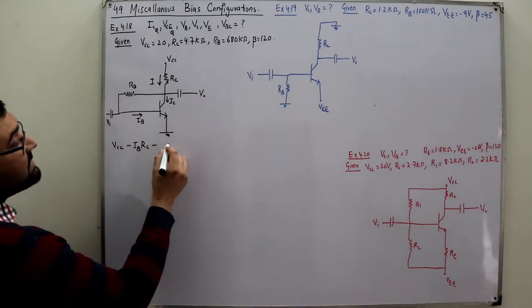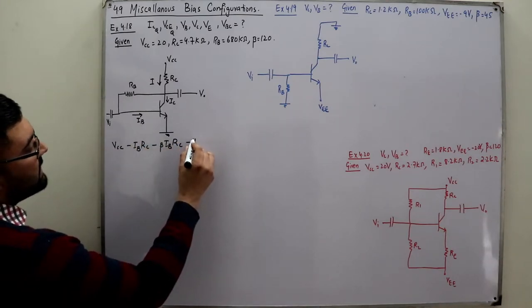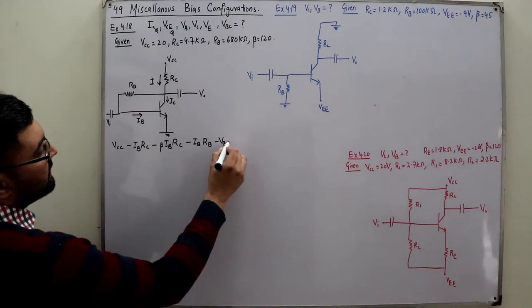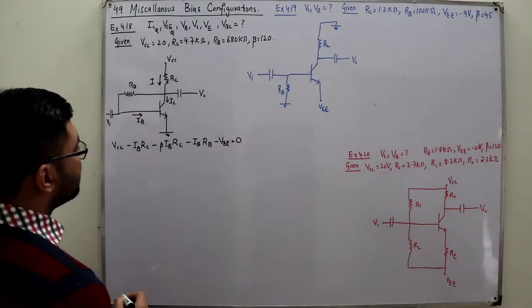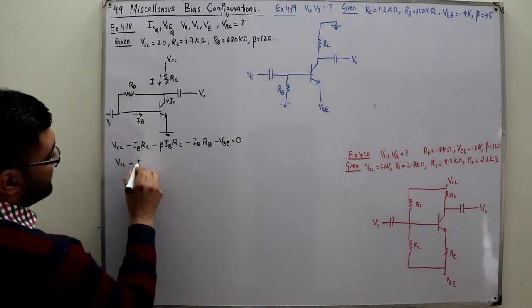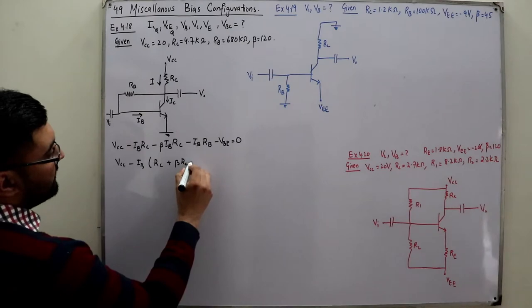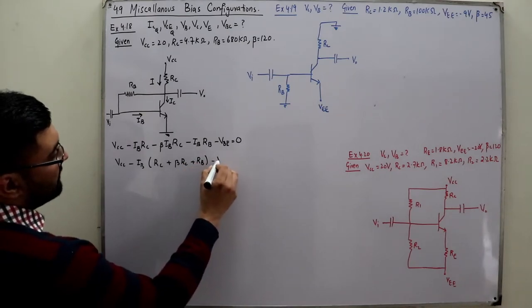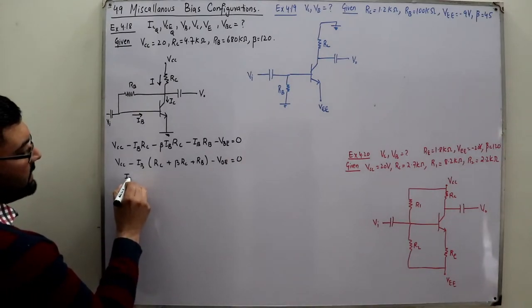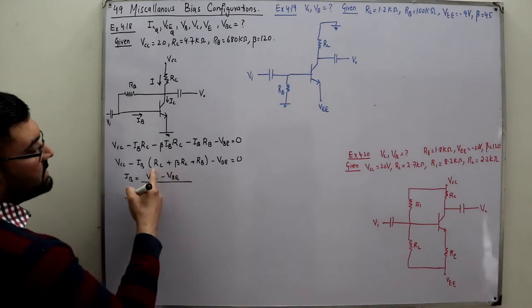Applying KVL: VCC minus (IB + IC) times RC, minus IB times RB, minus VBE equals zero. Since IC is beta times IB, taking IB common gives: VCC minus IB times (RC + beta·RC + RB) minus VBE equals zero.